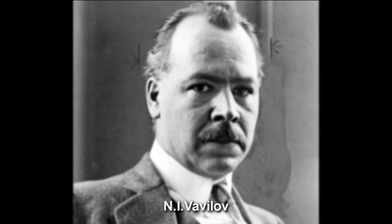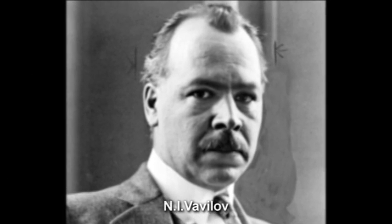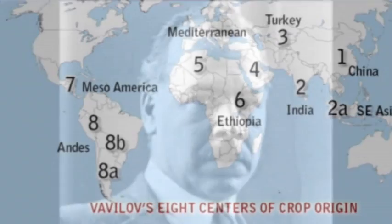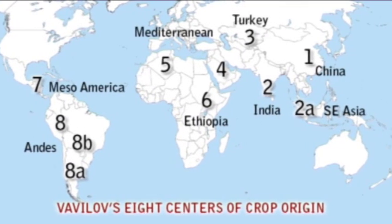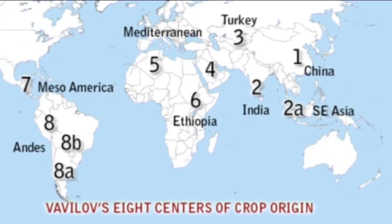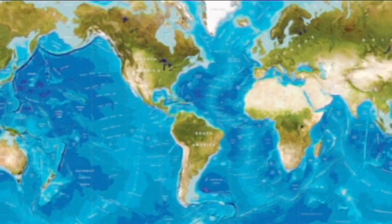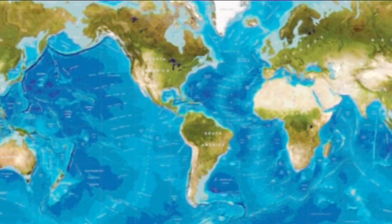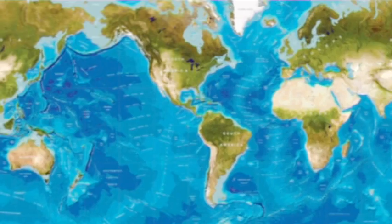Nikolai Ivanovich Vavilov, a Russian geneticist and plant explorer, gave the concept of centers of origin and diversity of cultivated plants, wherein different crops evolved in different parts of the world.